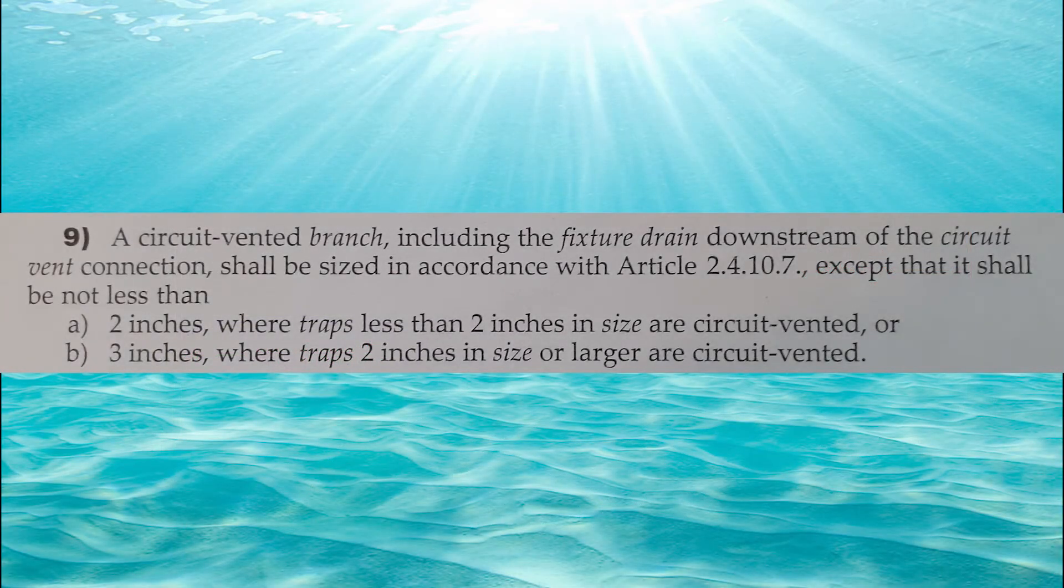Part 9. A circuit vented branch, including the fixture drain downstream of the circuit vent connection, shall be sized in accordance with Article 2-4-10-7, except that it shall be not less than 2 inches, where traps less than 2 inches in size are circuit vented, or be 3 inches, where traps 2 inches in size or larger are circuit vented.